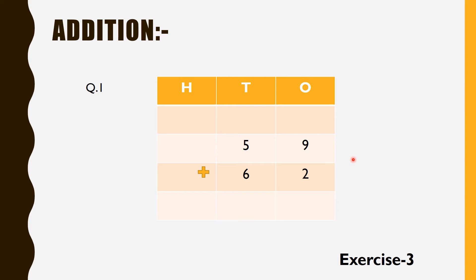While doing the addition, first we will add the two numbers at the ones place, that means 9 plus 2. When we do 9 plus 2, the answer will be 11, but we cannot write 11 in this place because 11 has two digits and we cannot write a two-digit number at the ones place. So we have to do the regrouping of 11. We will see this in the next slide.